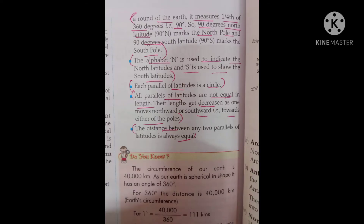The distance from the equator to the north pole or south pole is one-fourth of the way around the earth, measuring one-fourth of 360 degrees, which equals 90 degrees. Therefore, 90 degree north latitude marks the north pole and 90 degree south latitude marks the south pole. The letter N is used to indicate north latitude and S is used to show south latitude.